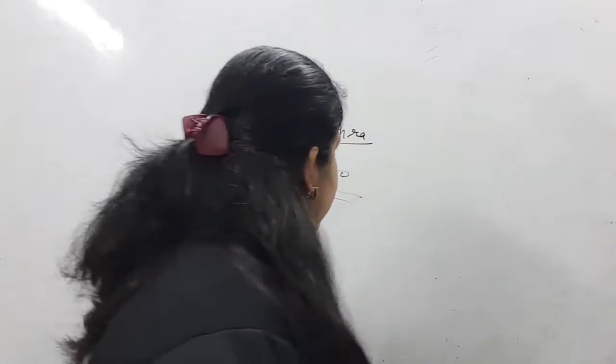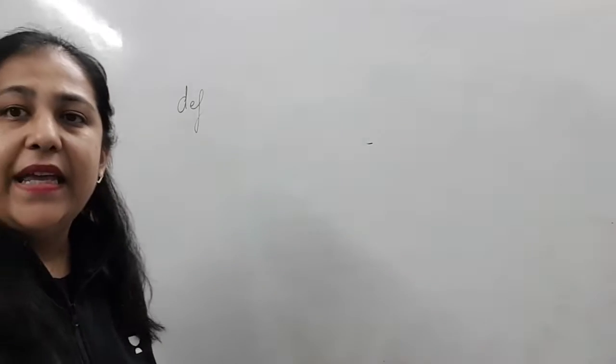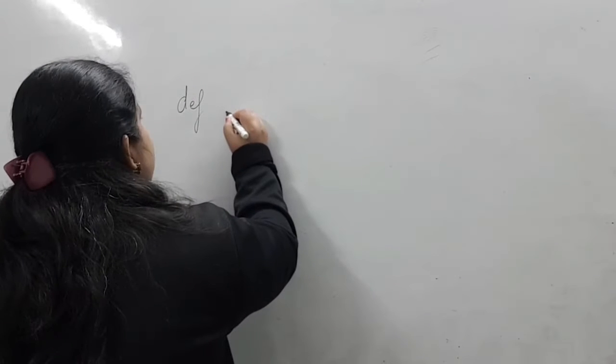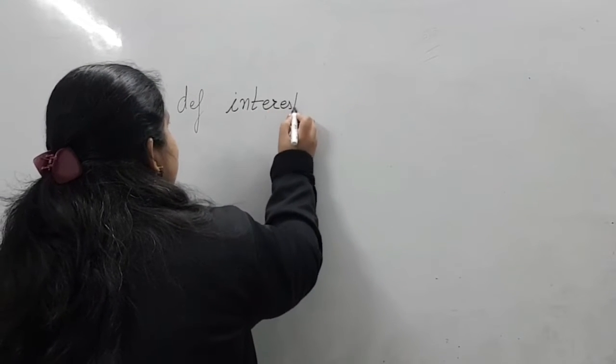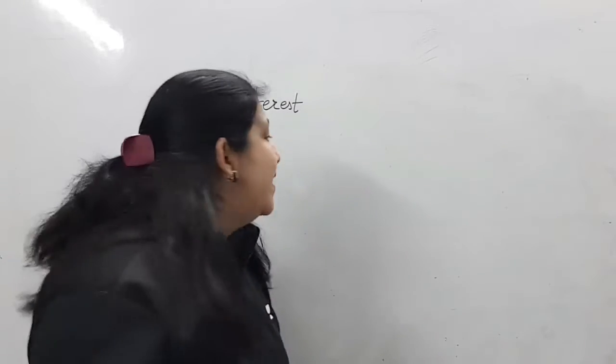Now let's come to our topic — functions, and how to create them. In the last class I showed you the greatest of three numbers function, which we called once. Similarly, you can make a function for anything. I had asked you to try creating a function to calculate simple interest. To create a function, the first word you write is `def` — it means we are defining a user-defined function. After `def`, you write the function name. The name can be anything you want. I gave it the name `interest` since we are calculating simple interest — so I wrote `def interest`.